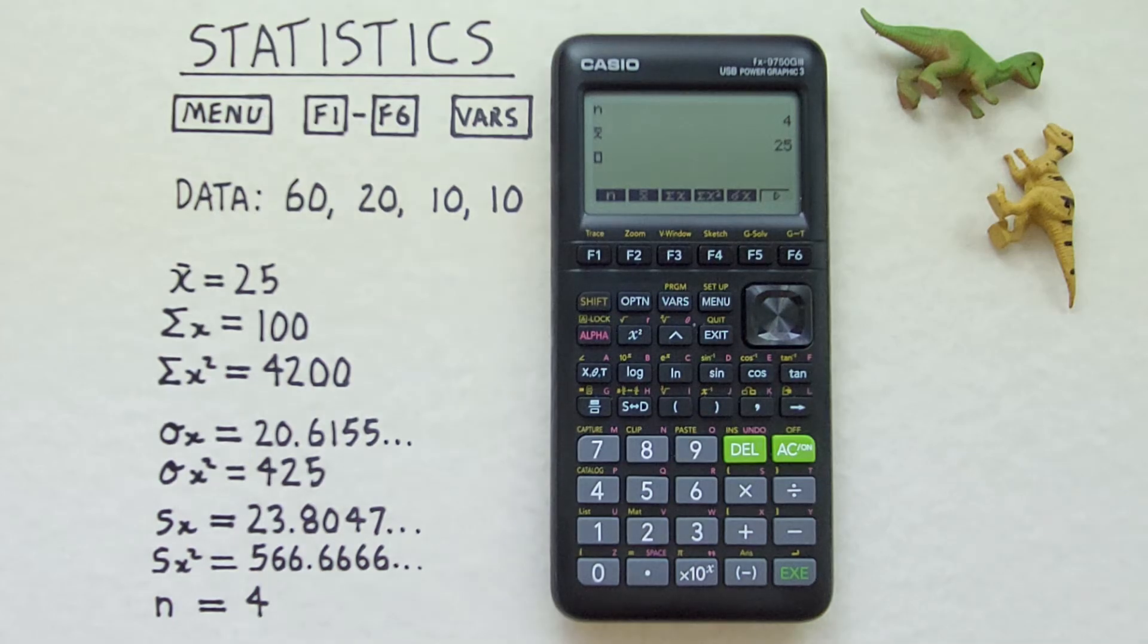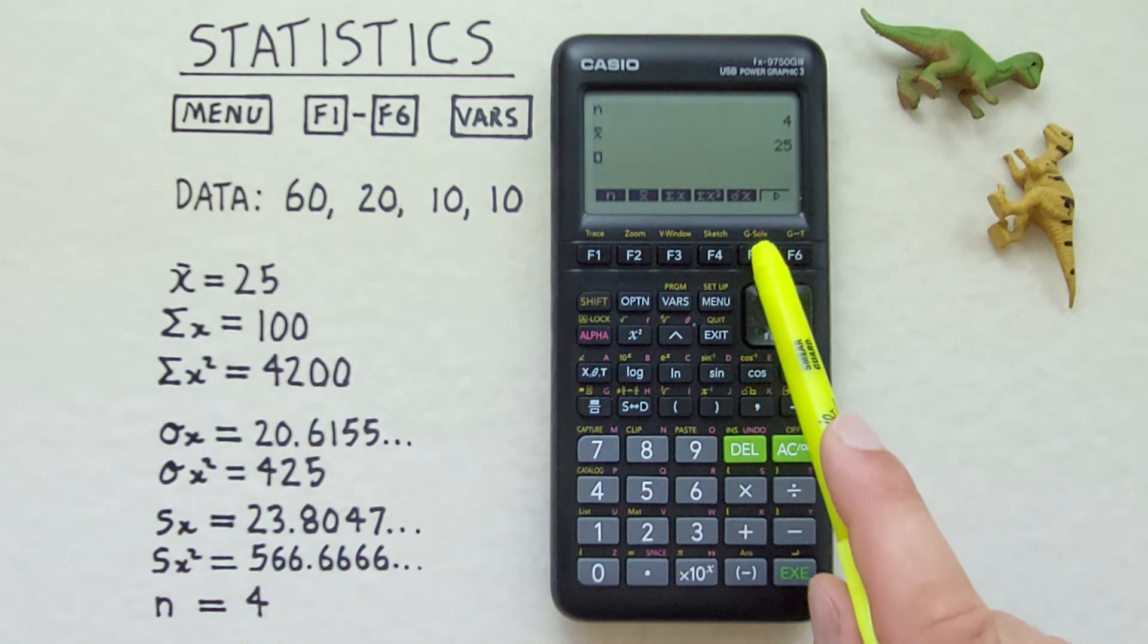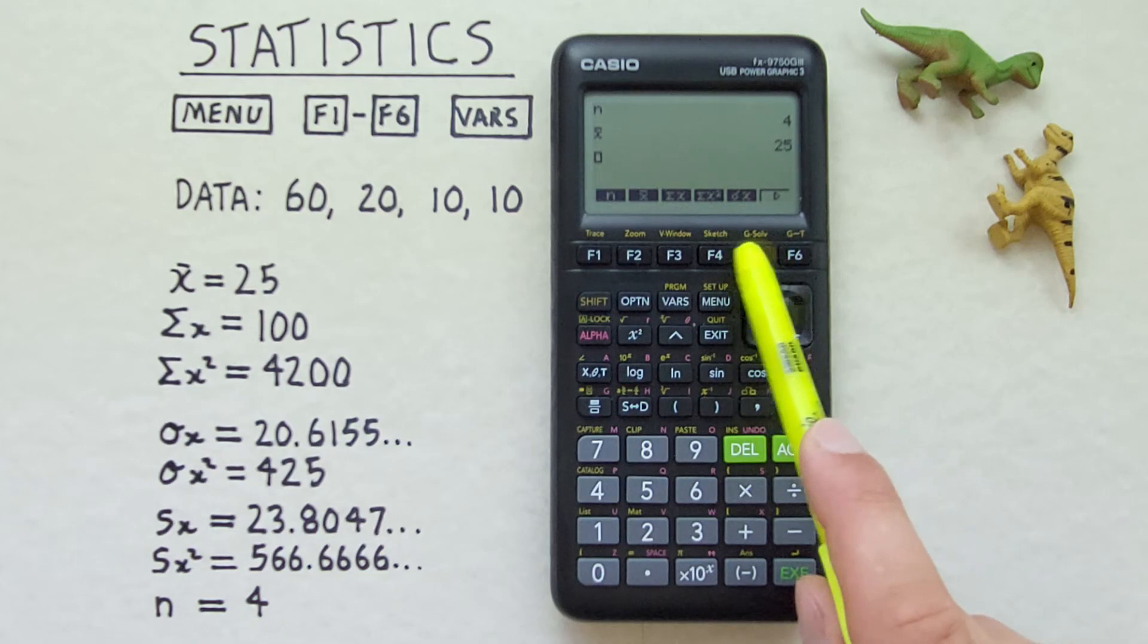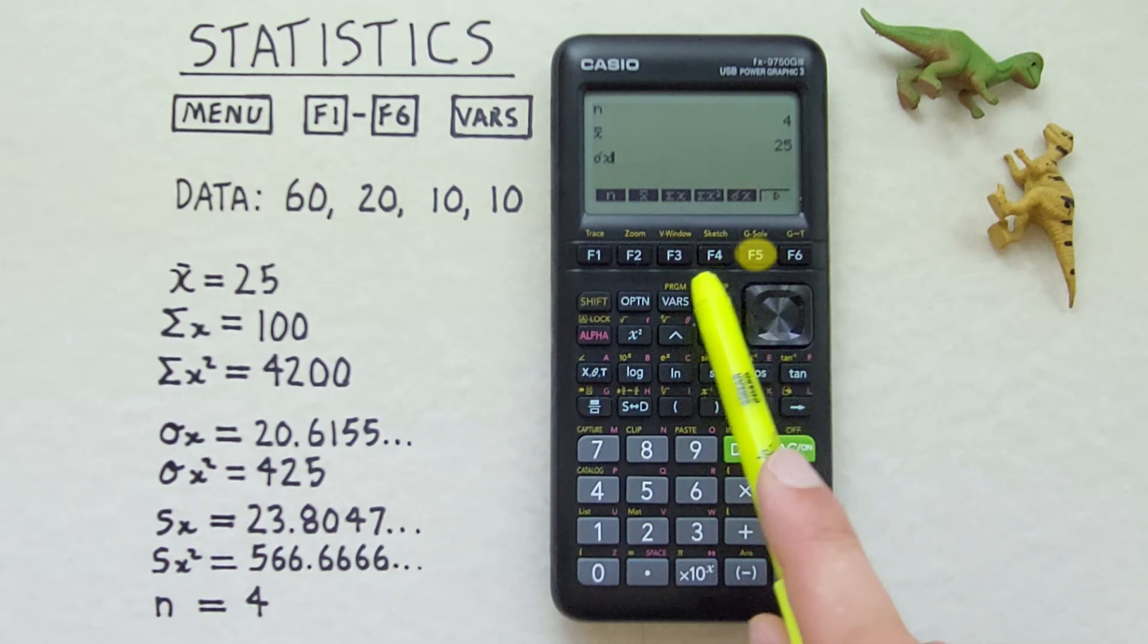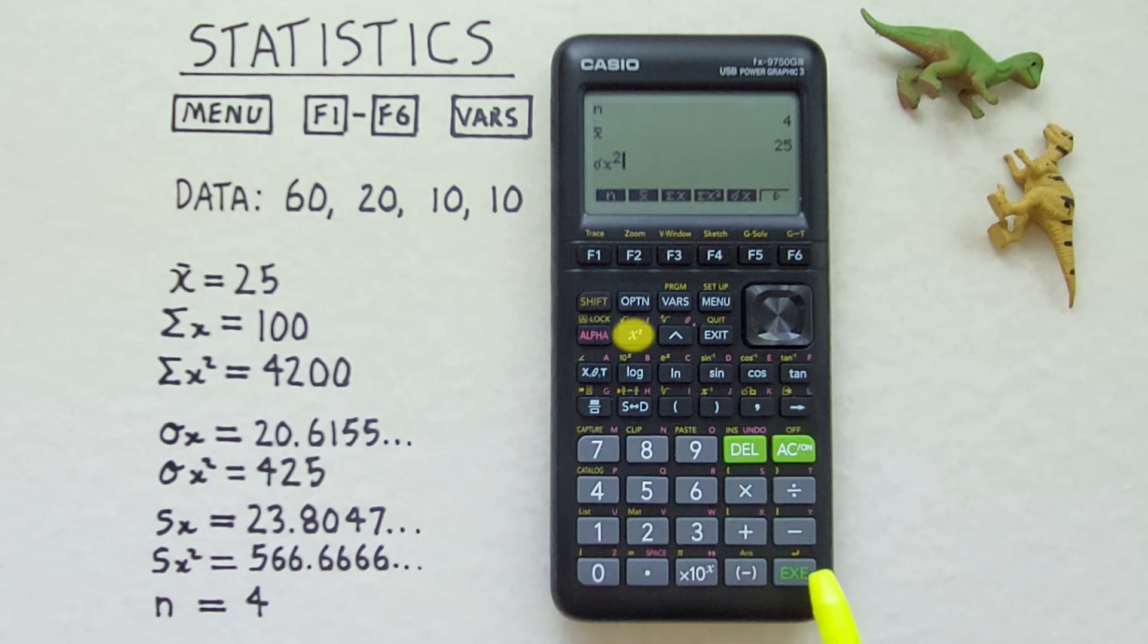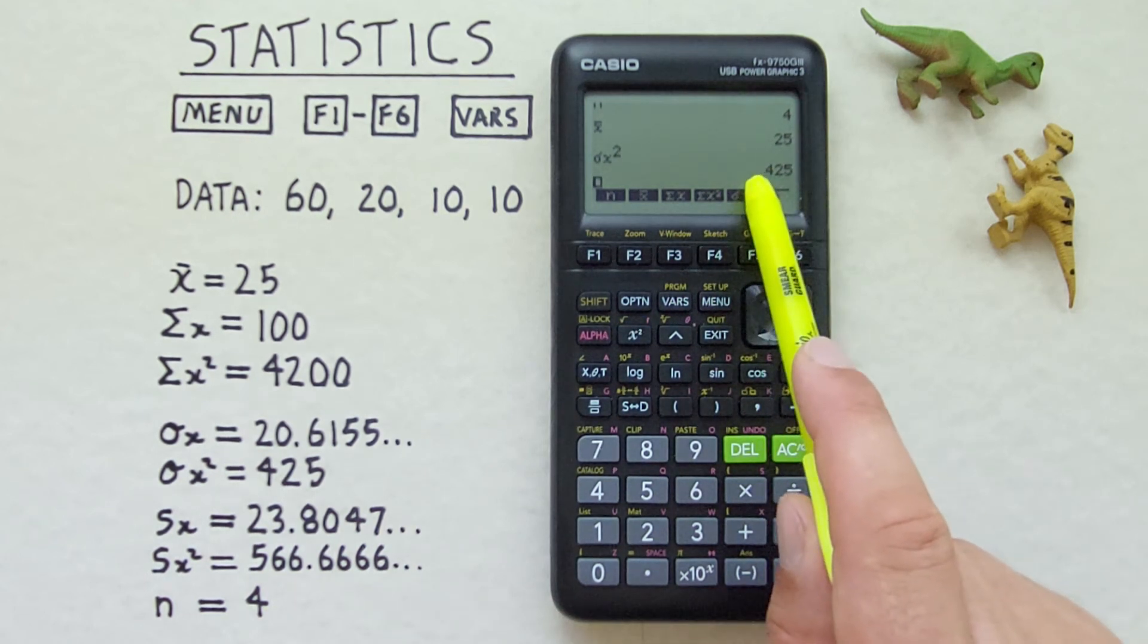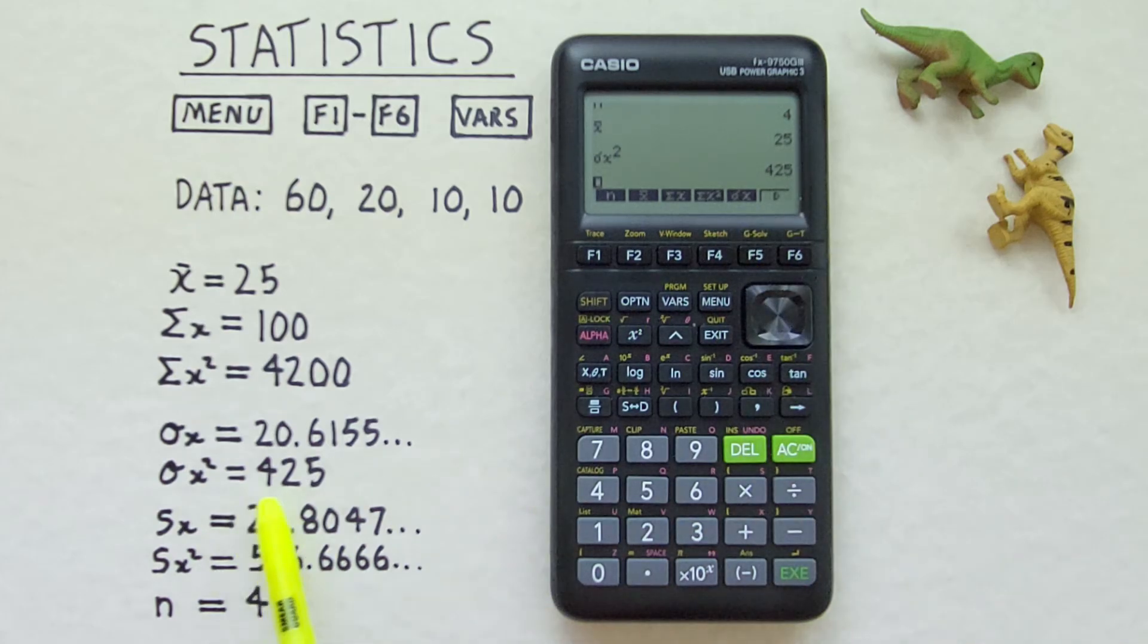If we want to determine our population variance. We know we find that by squaring our population standard deviation. So to get that we can recall our population standard deviation here with F5. And then square it with the x squared. And hit exe. And see we get a population variance of 425.